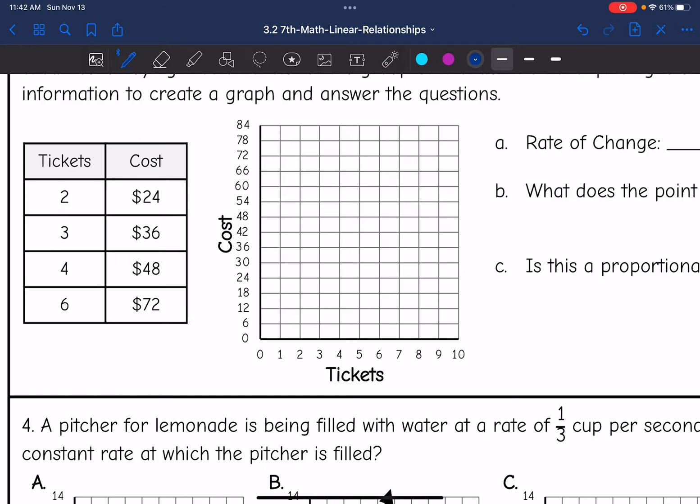So two tickets cost $24. I'm going to plot that first point right there at 2, 24. And then three tickets cost $36. Four tickets cost $48. And six tickets cost $72.